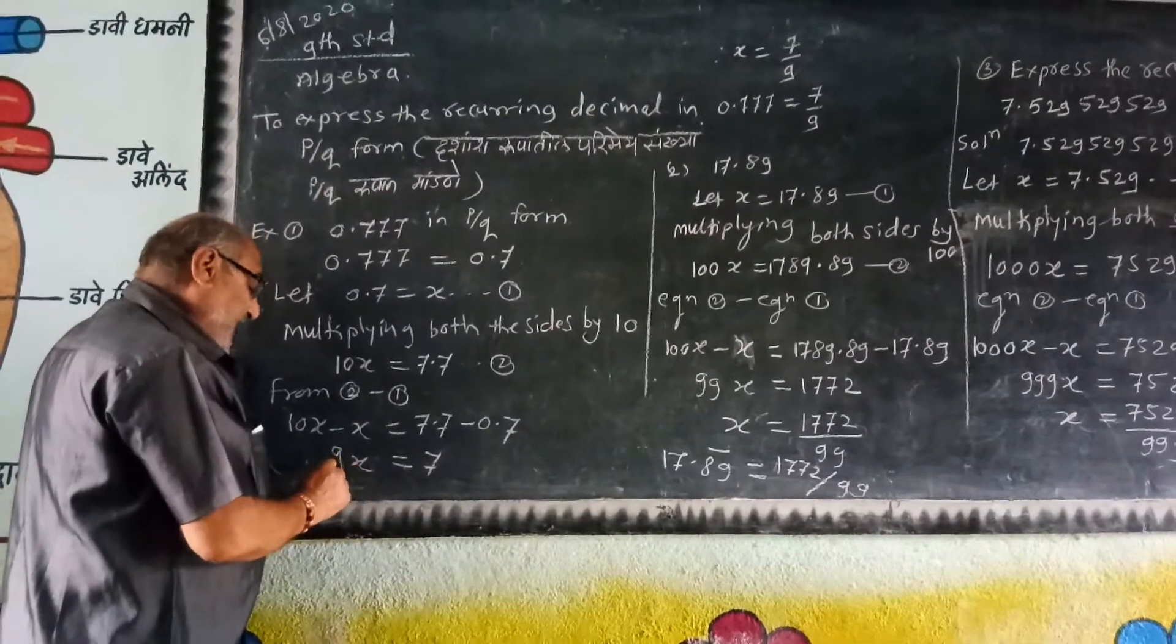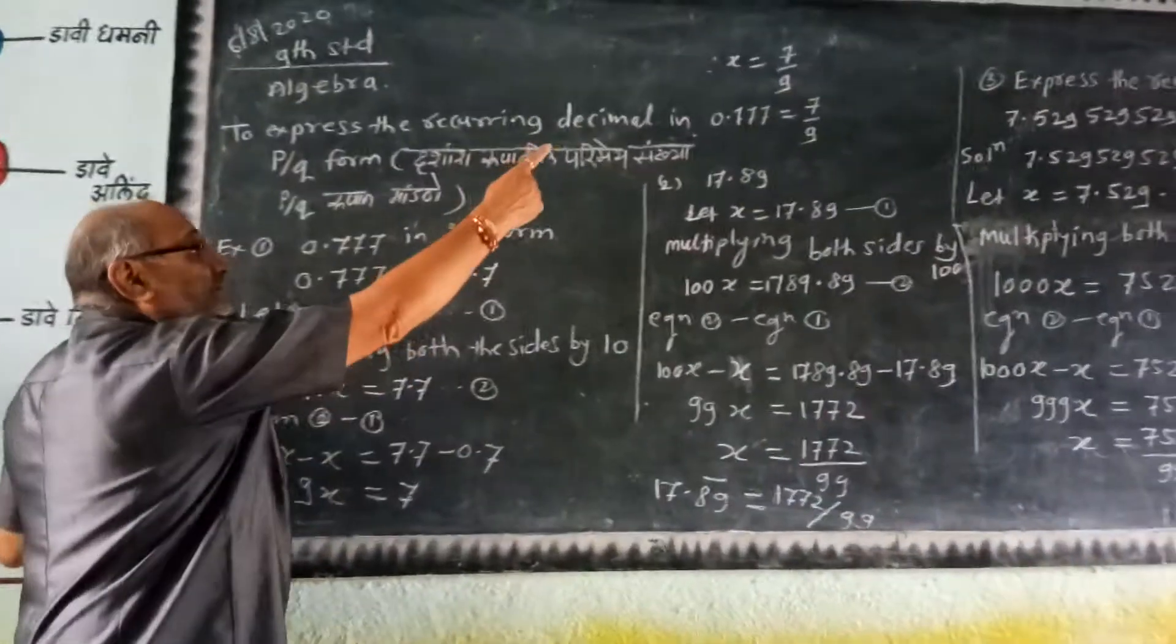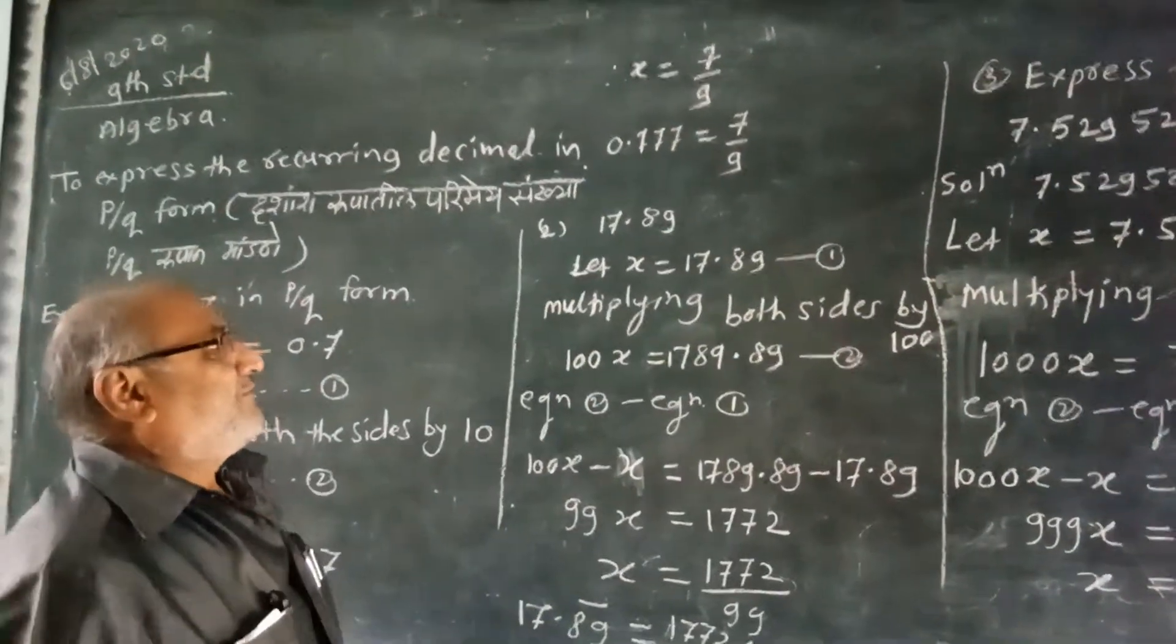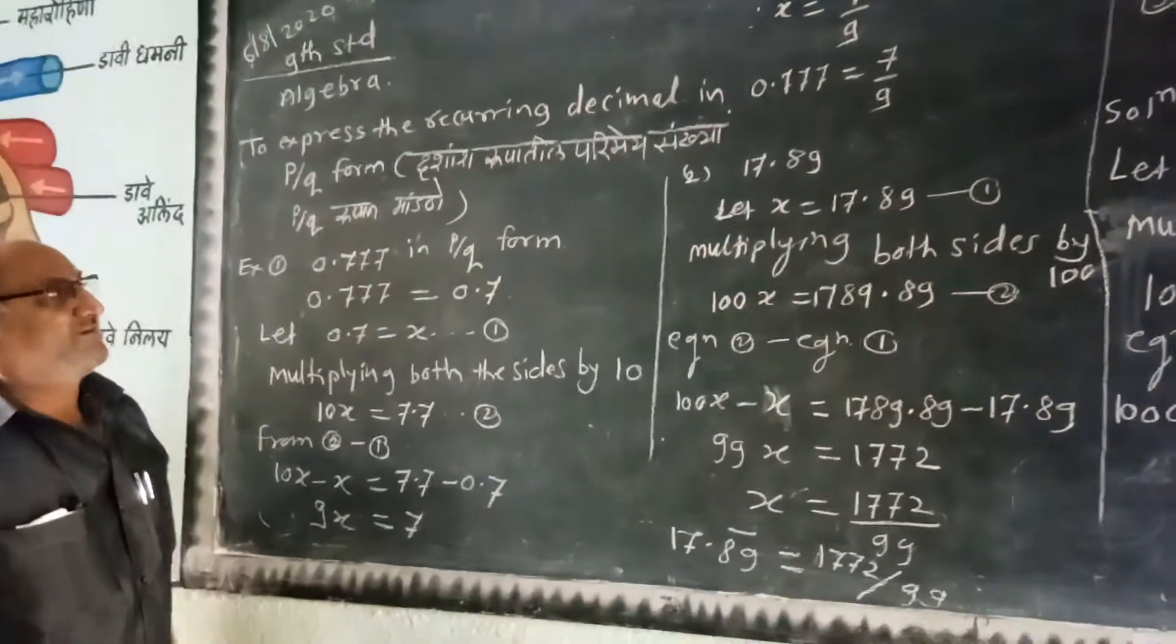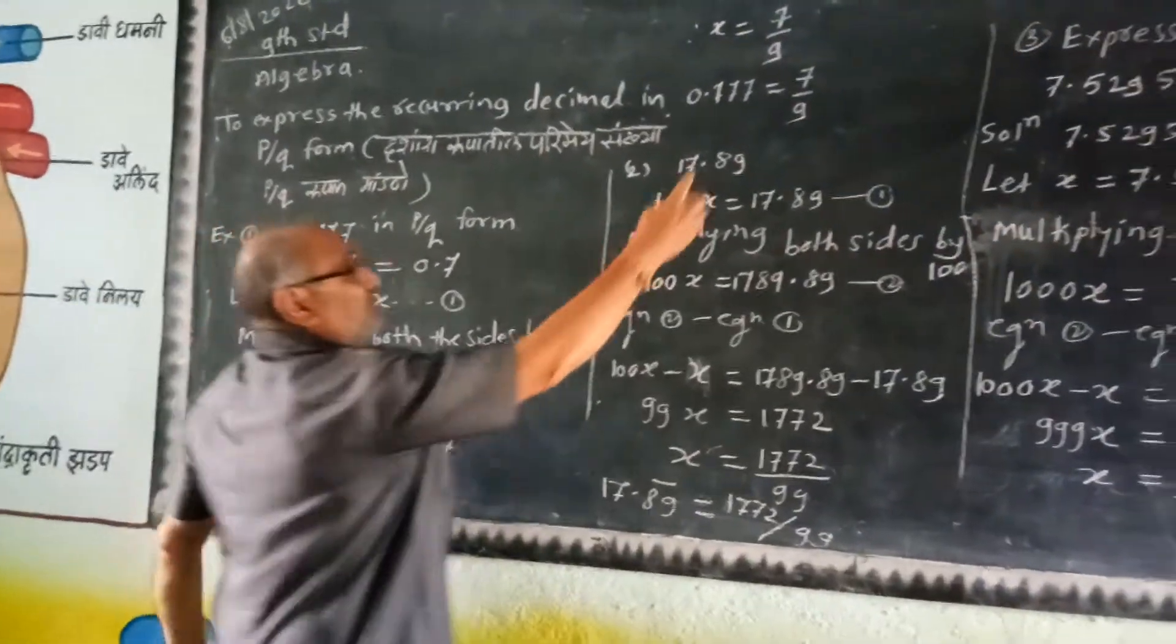Therefore x, dividing by 9, x is equal to 7 divided by 9. So 0.7̄ is equal to 7/9 in p/q form.